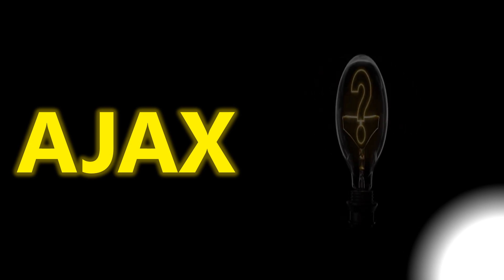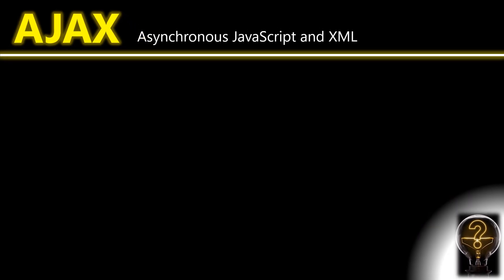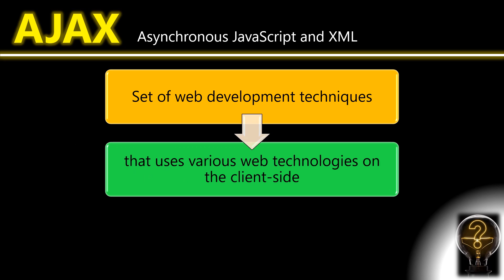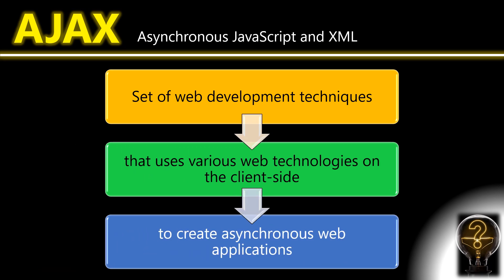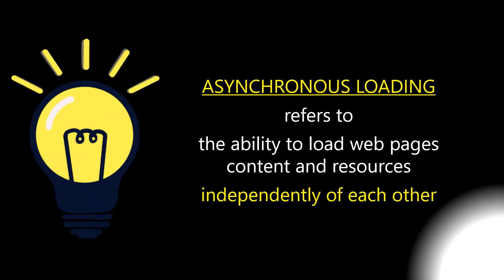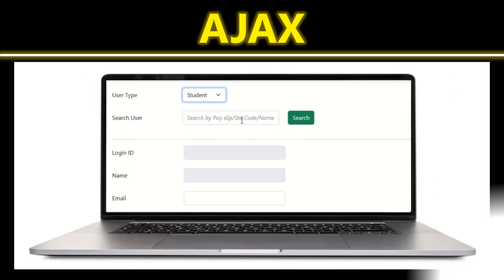Let's first understand what Ajax is. Ajax is an acronym for Asynchronous JavaScript and XML. It is a set of web development techniques on the client side to create asynchronous web applications. Asynchronous loading refers to the ability to load web page content and resources independently of each other. Web pages are updated asynchronously by exchanging small amounts of data with a server, without reloading the whole page.